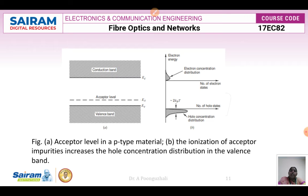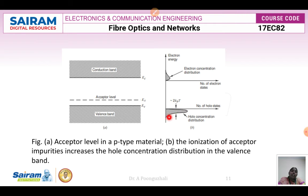In the energy band diagram for p-type material, this is the valence band and this is the acceptor level. When electrons are excited to the acceptor level, more holes become available. The electrons from the valence band move up to occupy the holes in the acceptor level, so more holes are formed in the valence band. The hole concentration is high in the valence band and electron concentration is low in the conduction band, making this a p-type material.